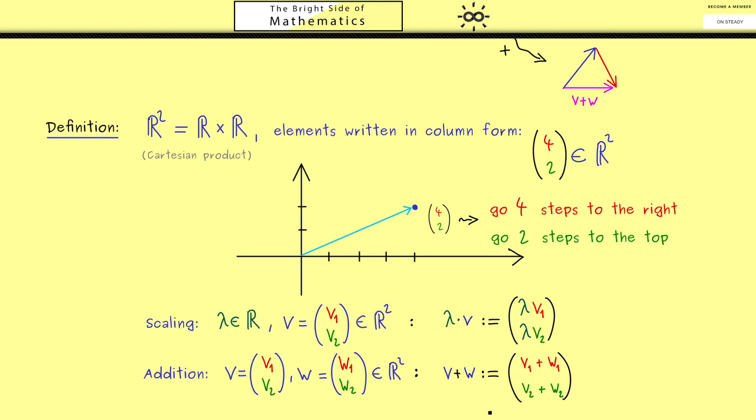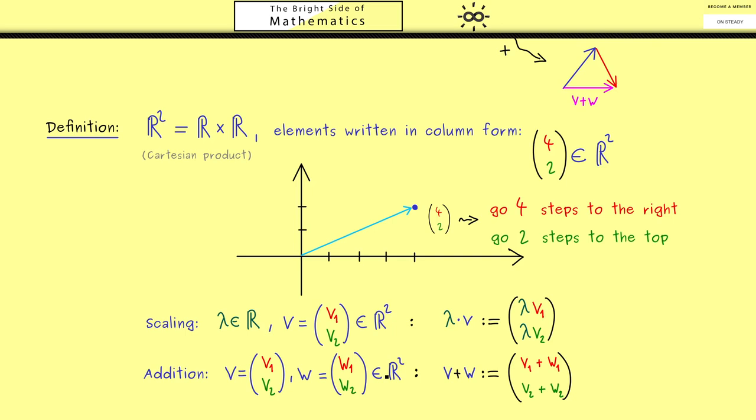Okay, with this we have our first definition. The set R² together with these two operations is called the vector space R². Hence we can immediately calculate in this new vector space, and then all the calculations make sense because we have defined the objects now.